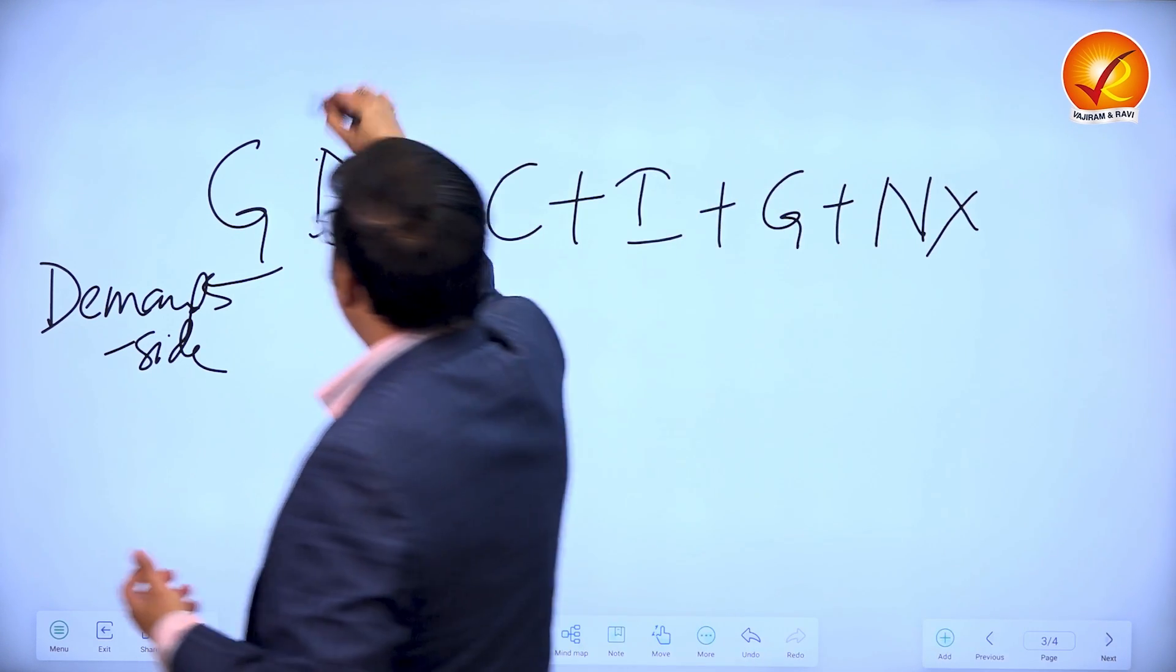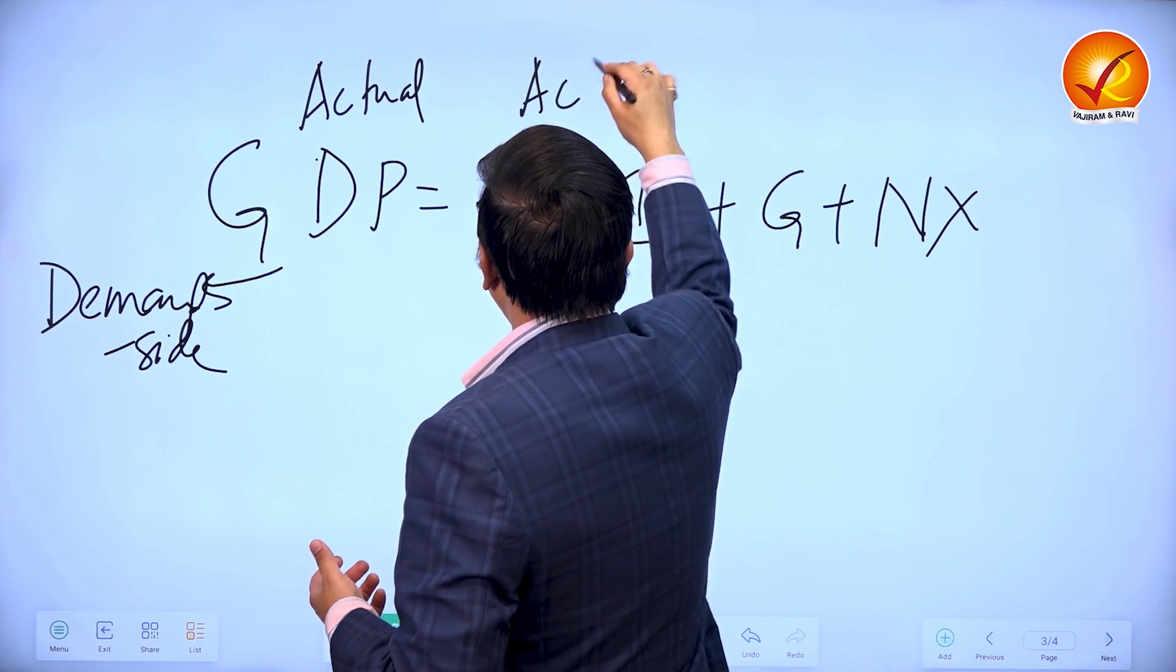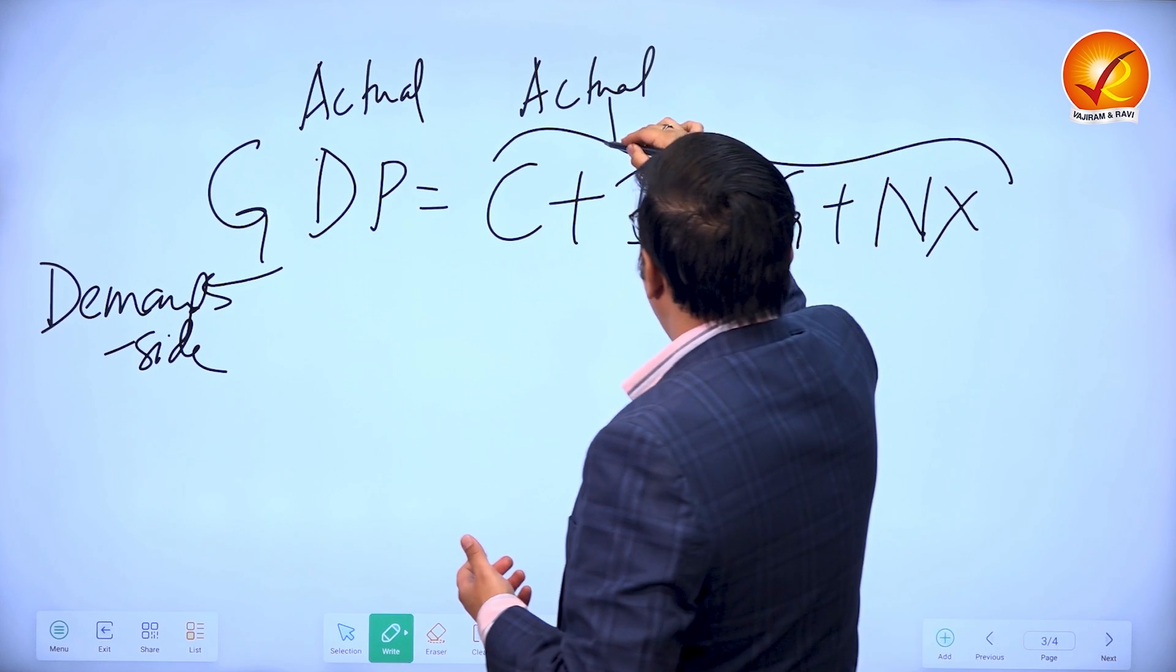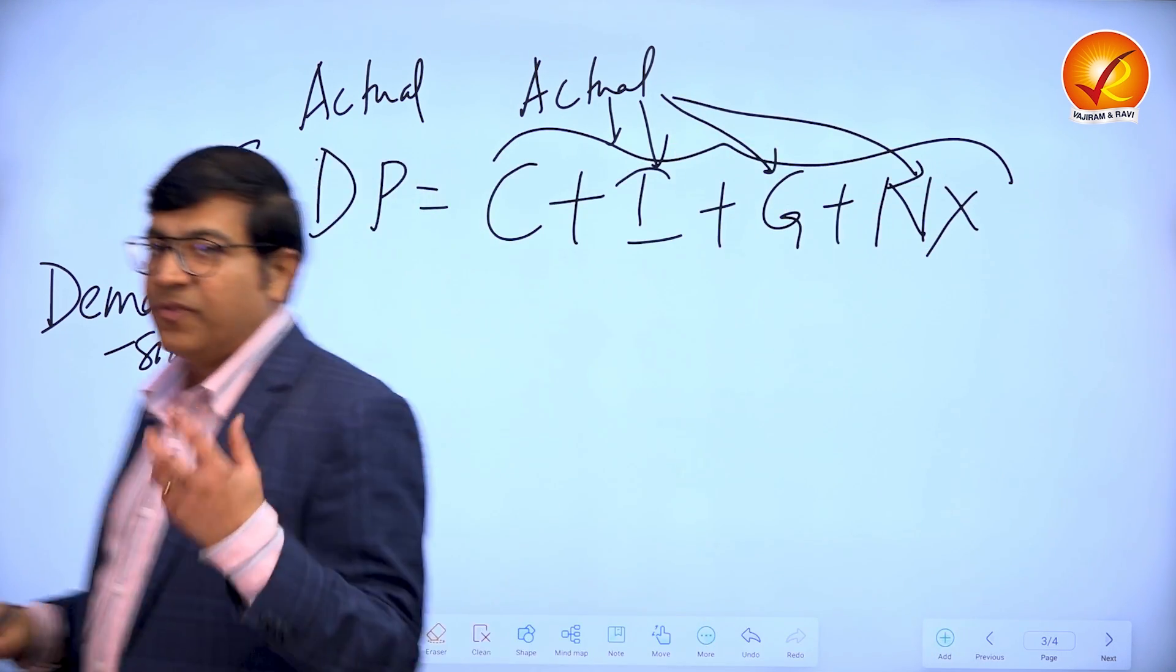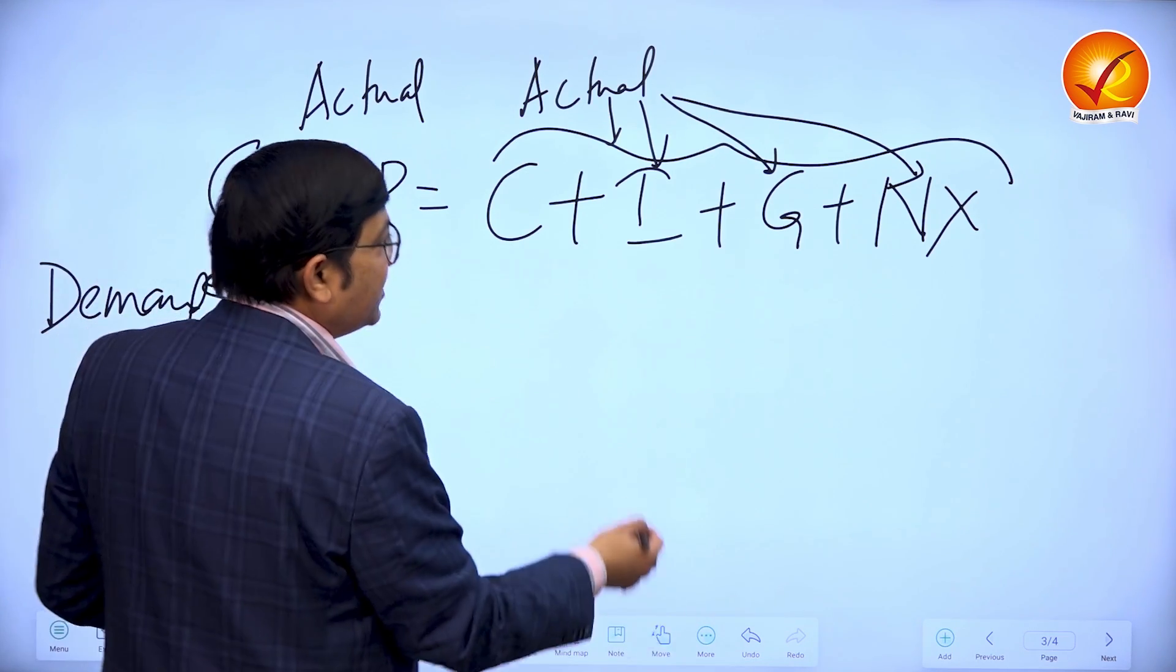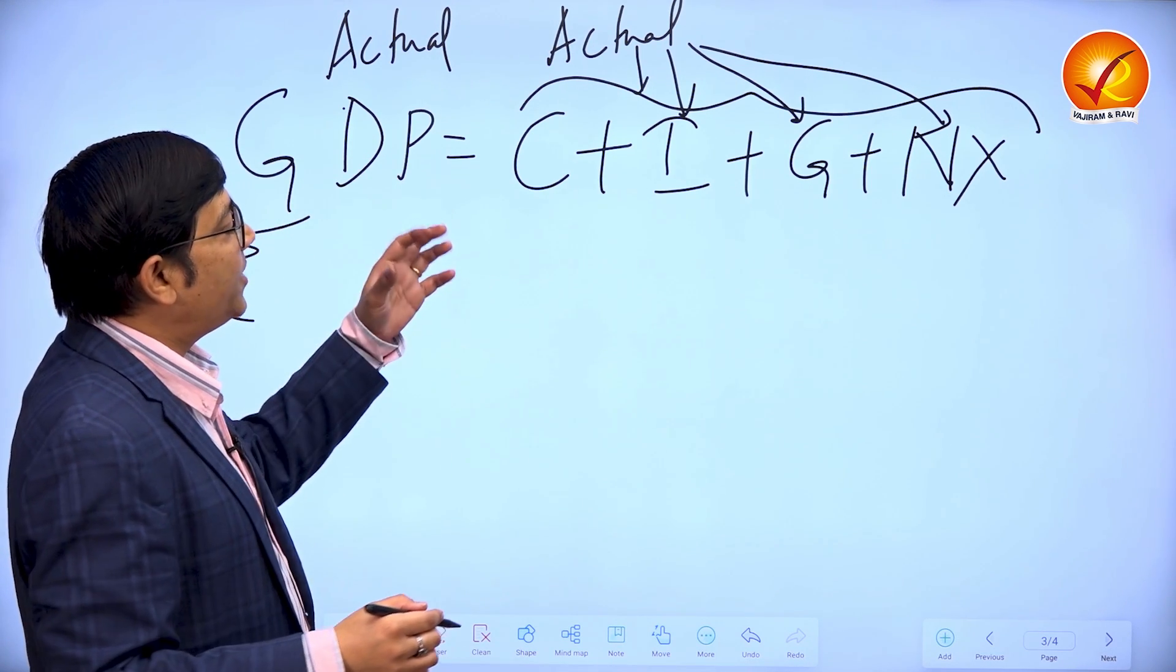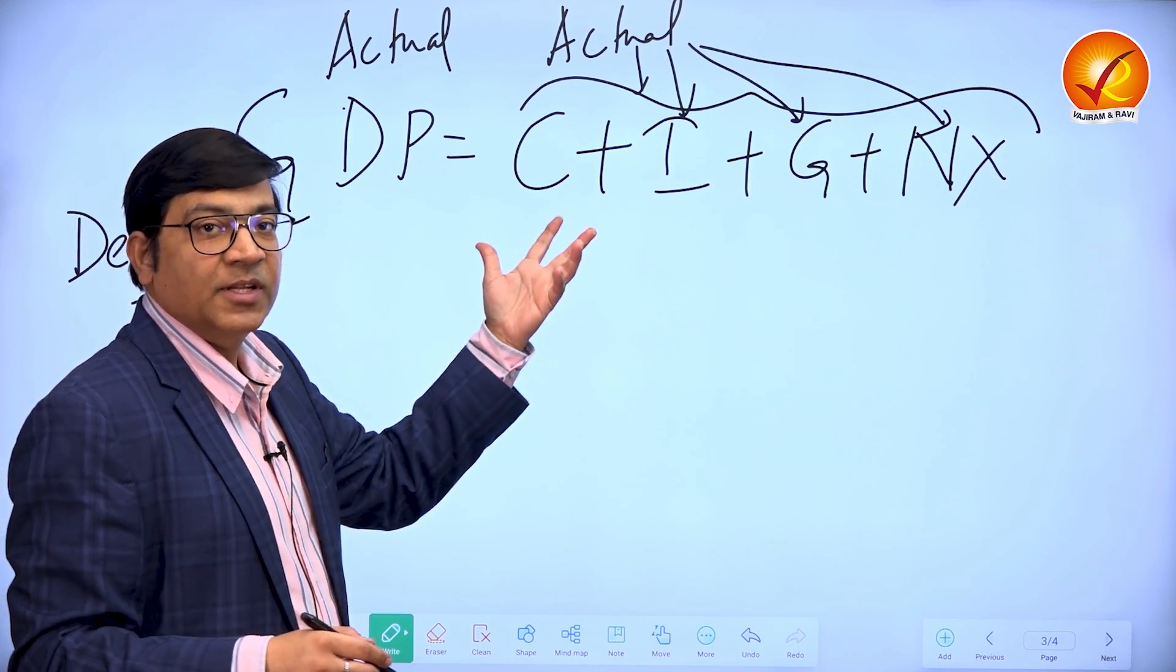When we talk of actual GDP, we are talking about actual consumption, investment, government expenditure as well as net exports. What is actual exports? What is actual export or actual investment in the country? And what about the potential one? The potential GDP would mean how can we potentially increase consumption.